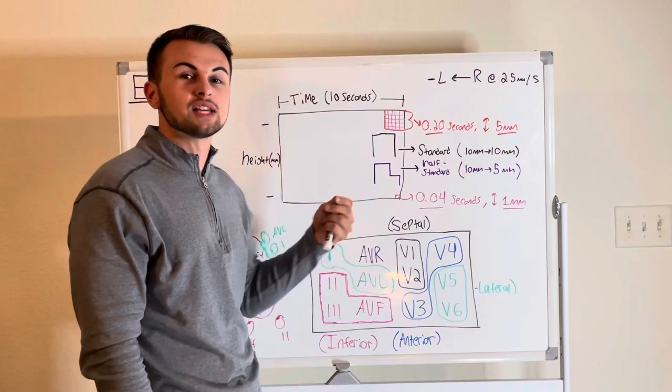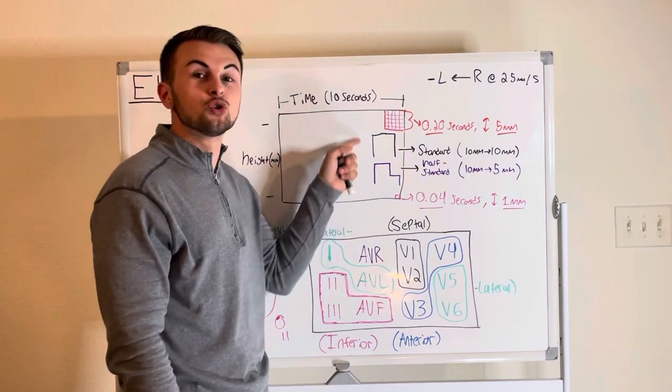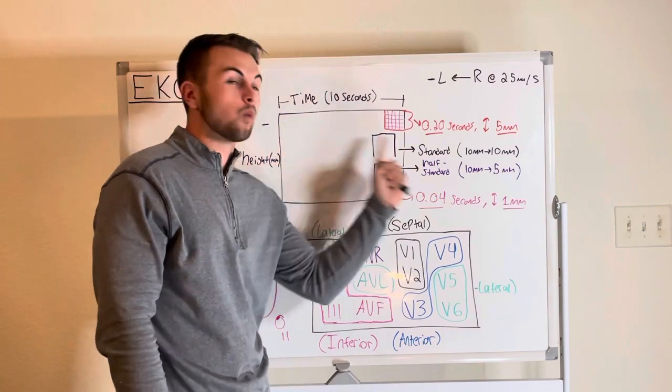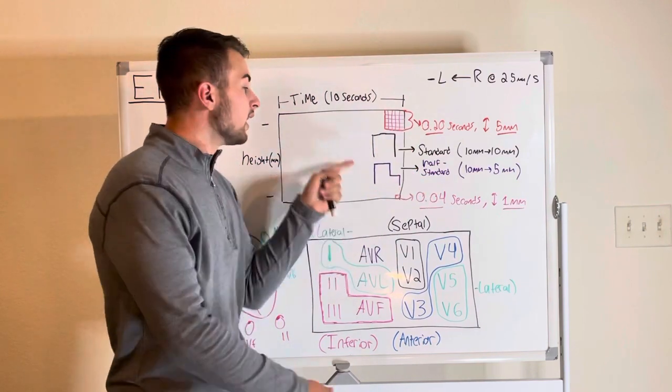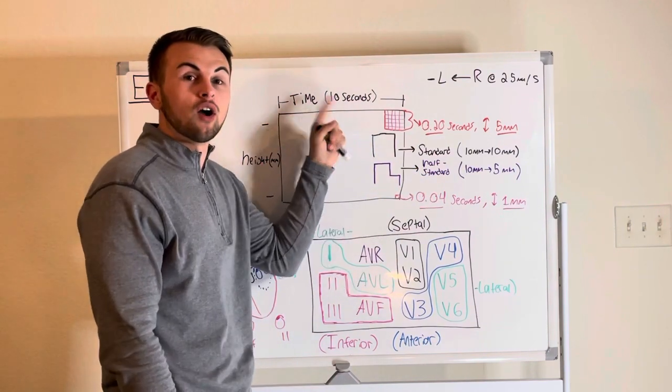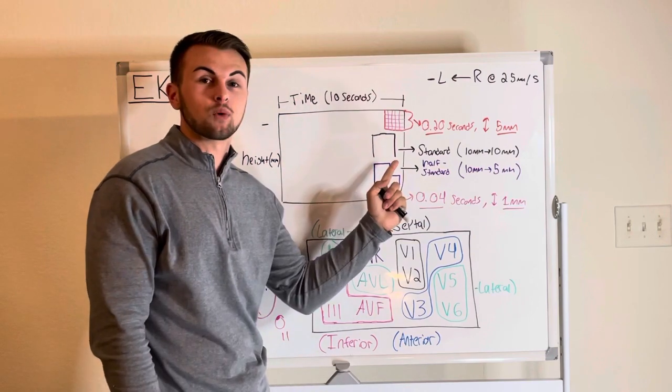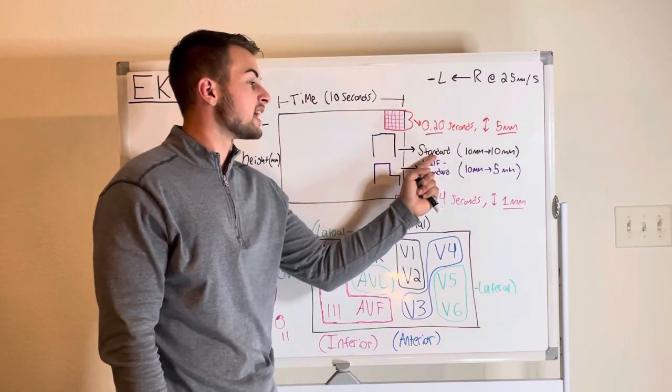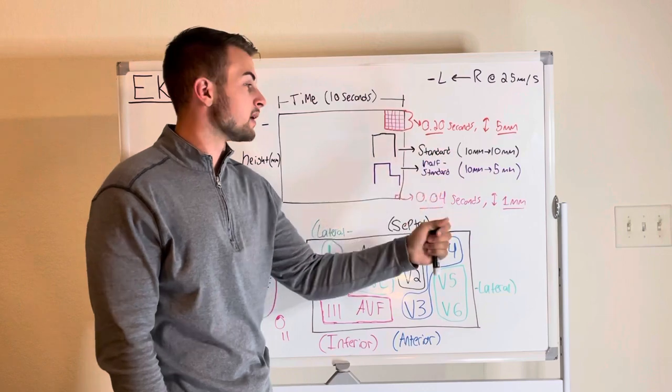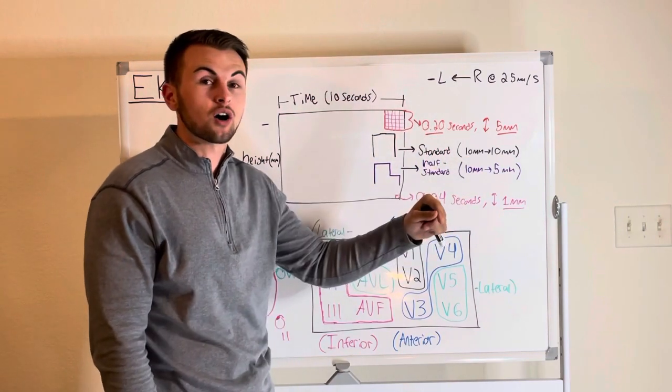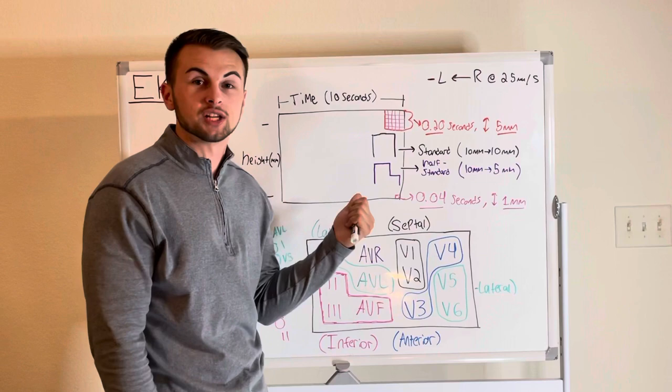This means that you will see a box that is two big boxes tall and one big box wide or 10 millimeters tall and 0.2 seconds wide. This is called standard calibration. This means if a box is 10 millimeters tall it is going to be 10 millimeters tall on the sheet.